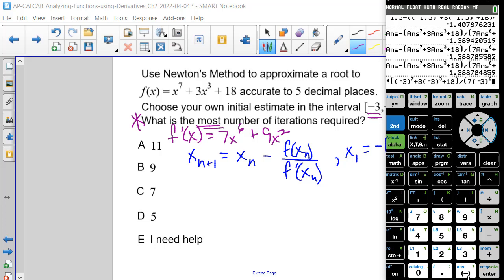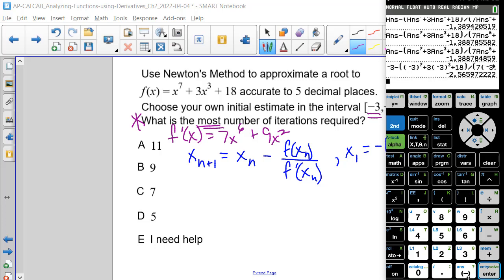So we're going to divide that by 7 times negative 3 raised to the 6th. So we're going to divide that by 7 times negative 3 plus 9 times negative 3 raised to the 2nd power. And close that parenthesis. And close that parenthesis.